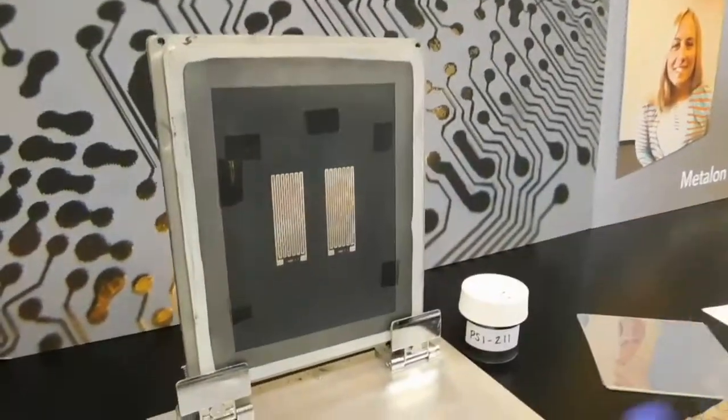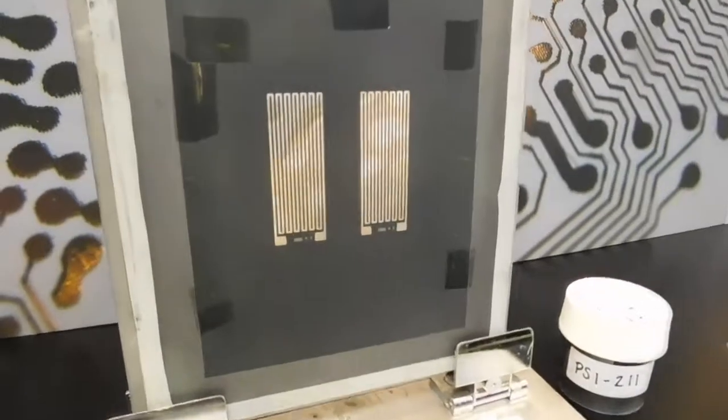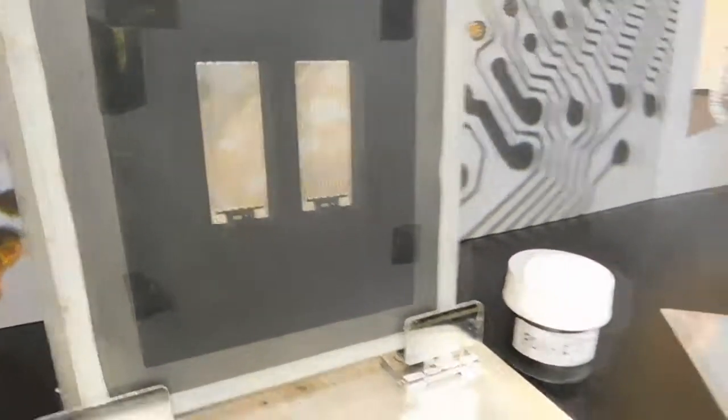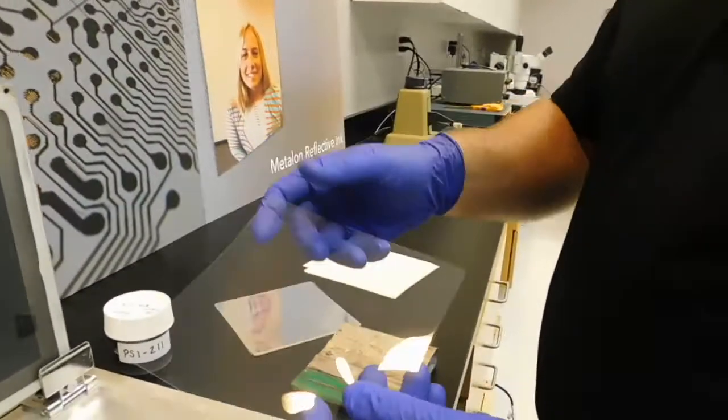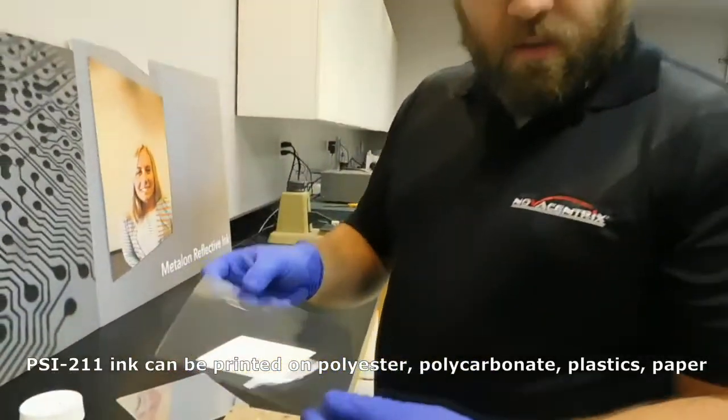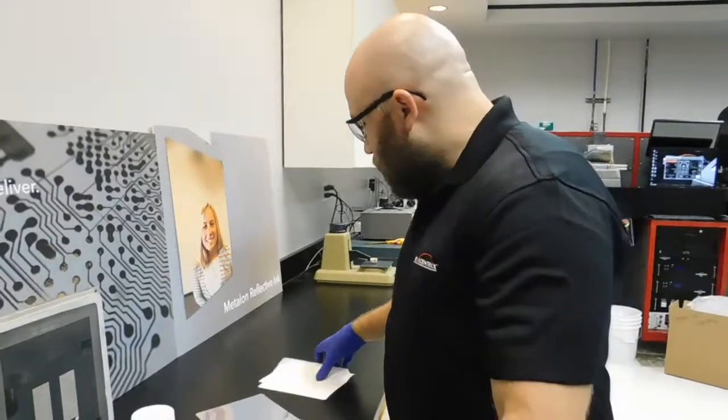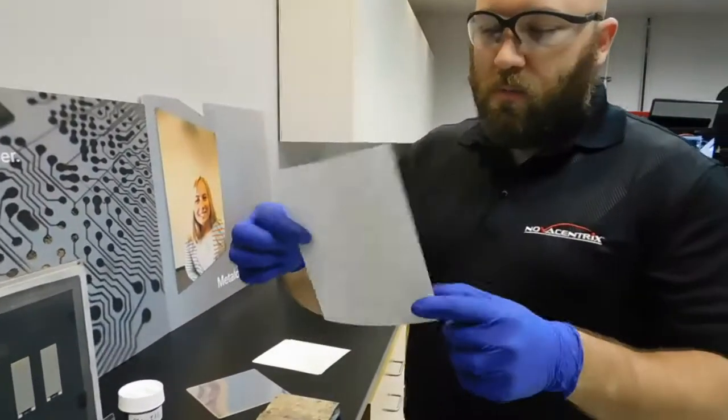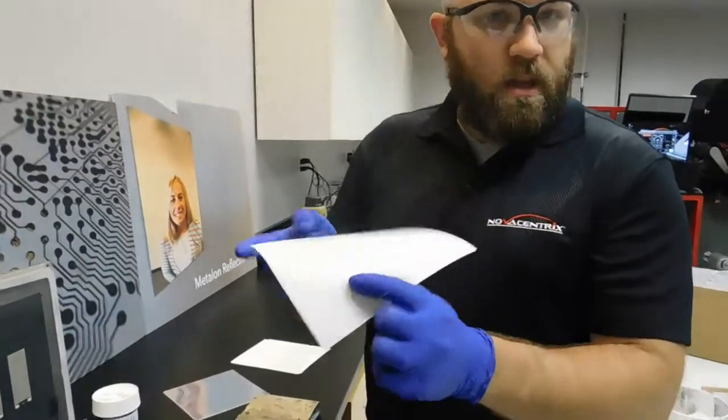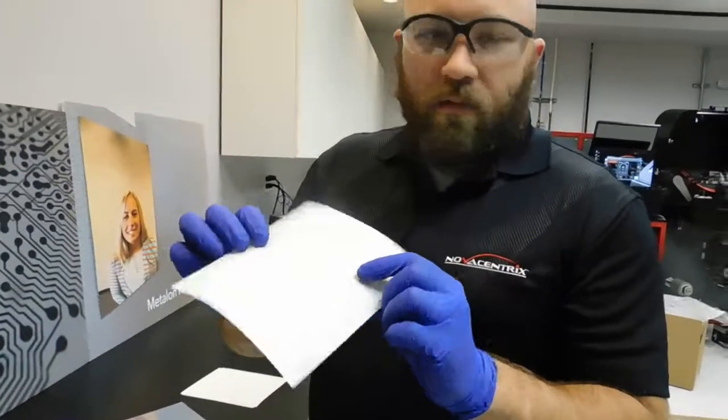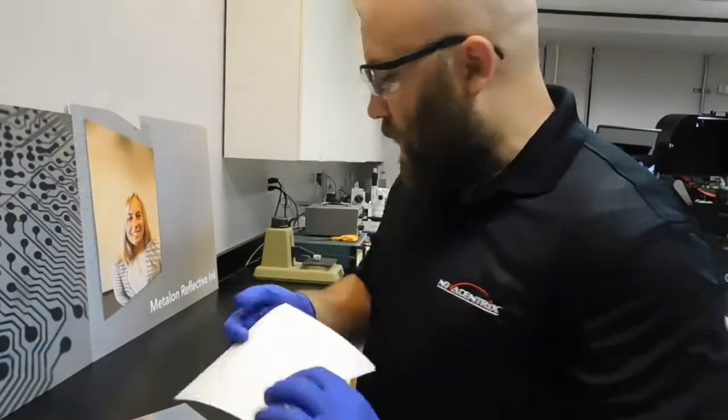So we're going to print on a couple of different substrates and this ink is good for polyester, polycarbonate, a lot of different plastics which would be non-porous and probably flexible like that, or papers which might be somewhat porous. This is actually a label paper, a lot like what you'd have on glass bottles for drinks and things like that.